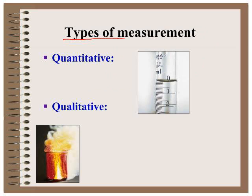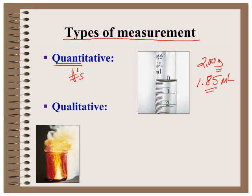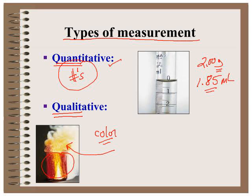There are two types of measurements that you will be making in chemistry. One is quantitative, which uses an instrument and a measuring device, and there will be numbers — for example, 2.00 grams or 1.85 milliliters. The other type of measurement is qualitative: color, states of matter such as gases being formed, or describing the reaction taking place. So quantitative measurements use your equipment, and qualitative measurements use your senses.